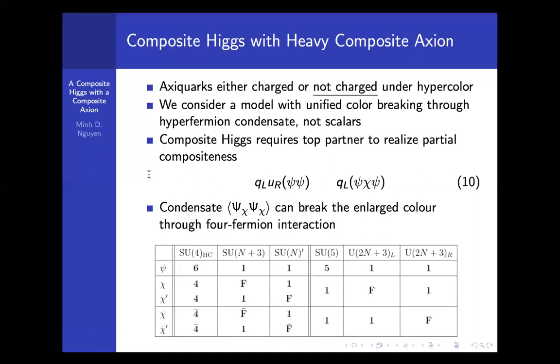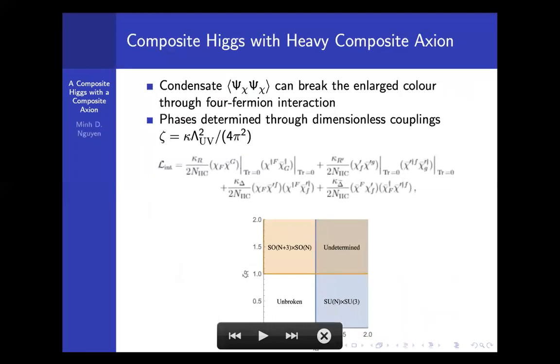Here is an example of the models that we consider. In this case, the gauge group, the hyperfermion, the hypercolor is SU(4). We have a SU(5) global symmetry for the ψ, and then a U(2N+3)L × U(2N+3)R symmetry for the ψχ. We write down a four-fermion interaction model for this top partner, for this χ. It turns out that the symmetrical breaking pattern is going to be dependent on this four-fermion coupling.